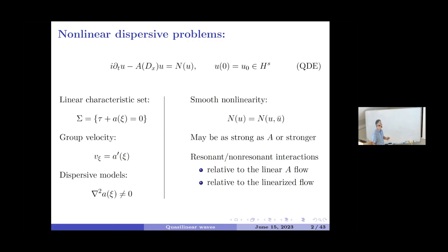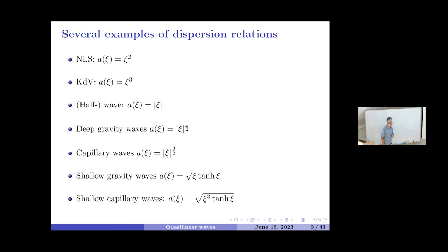One important item in my story is about resonant versus non-resonant interactions. The naive way to think about this is resonant or non-resonant relative to the linear flow. But the deeper way to think about it is in terms of resonant or non-resonant interactions relative to the linearized flow associated to an arbitrary solution of this equation — not linearizing around zero, but around an arbitrary solution. I give some examples of dispersion relations: NLS, BBM, half-waves, gravity waves. And later I'll say more about wave equations and gravity waves.